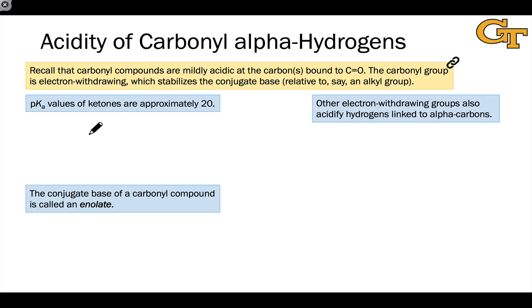Carbonyl compounds are mildly acidic at the carbons bound to the carbonyl group, specifically the alpha carbons. And when we say mildly acidic we mean that the pKa value of a simple ketone is about 20. Acetone is a prototypical example, and if we look at the pKa value for deprotonation of the hydrogen in a methyl ketone by water, we end up with a pKa value here of about 20.